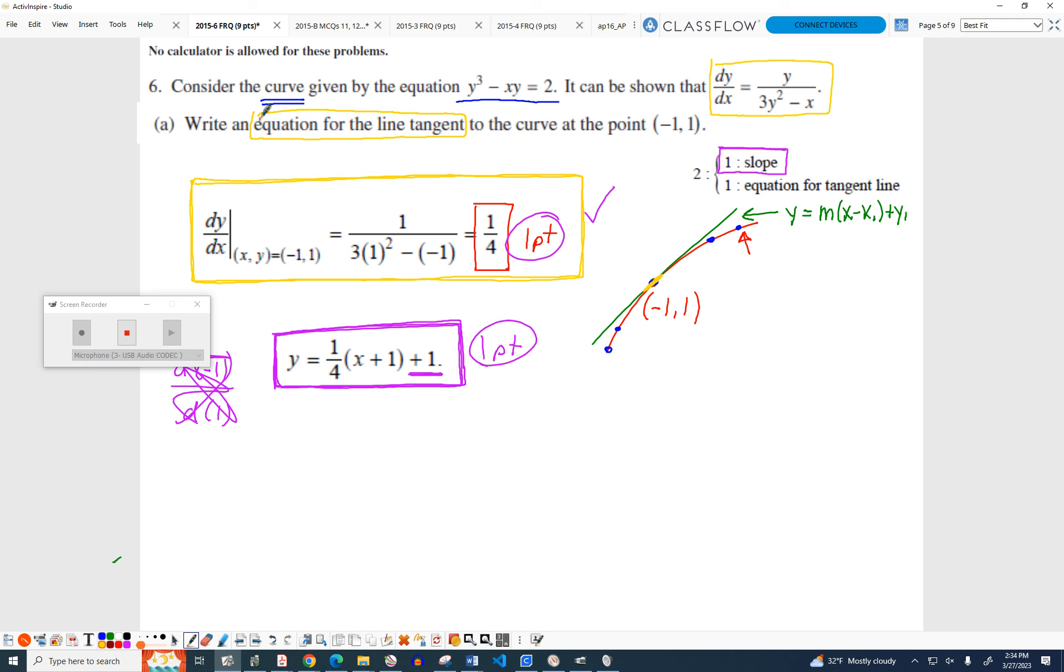Can they write G of X instead of Y? That would be fine. So if they don't have the one-fourth separate and they have it in the equation, then they're good. That's okay, yeah. So if they have the purple box, they would earn both points, two out of two. Good question.